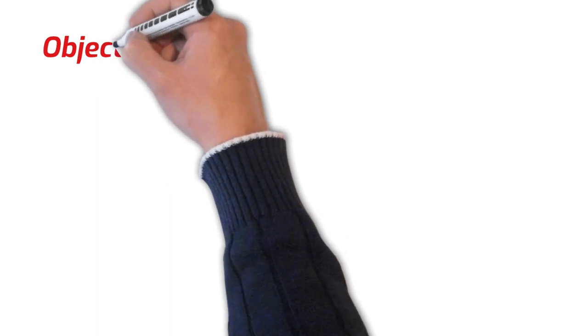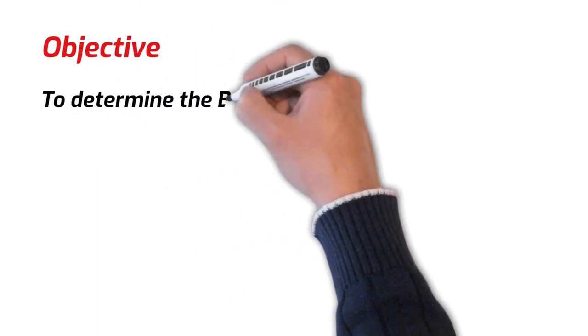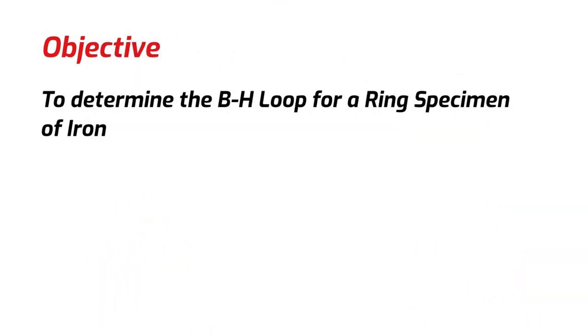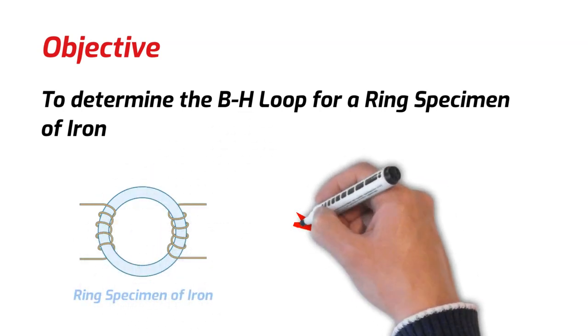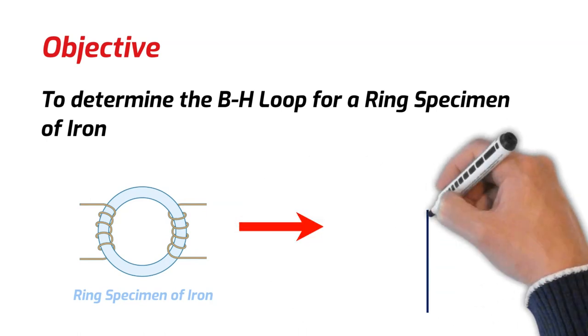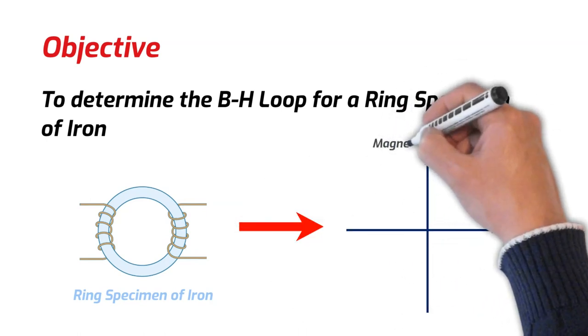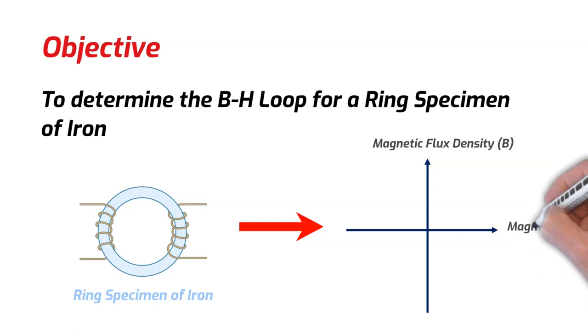The objective of this practical is to determine the B-H Loop for a ring specimen of iron. In this practical, we will apply a magnetic force to a ring specimen of iron and we will be plotting the magnetic flux density against the magnetic force.